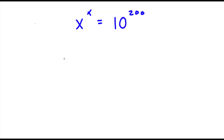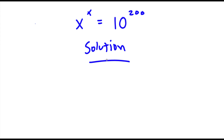Alright, so we have x to the power of x is equal to 10 to the power of 200. Now for our solution, we start with x to the power of x is equal to 10 to the power of 200.